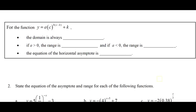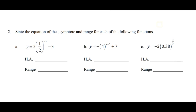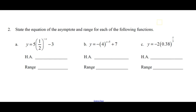For the function in its transformed form, y equals a times c to the power of b(x minus h) plus k: the domain is x is an element of the reals. If a is greater than zero, the range is y greater than k. If a is less than zero, the range is y less than k — because it's been reflected. And the equation of the horizontal asymptote is y equals k, because the only thing that affects the horizontal asymptote is a vertical translation.